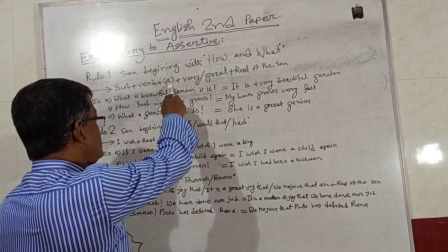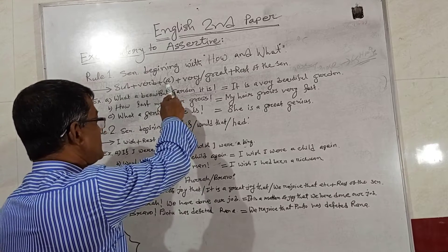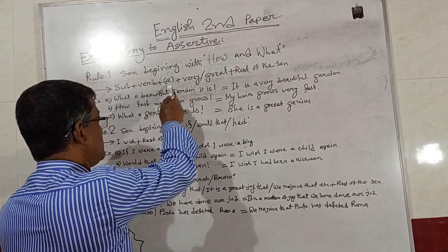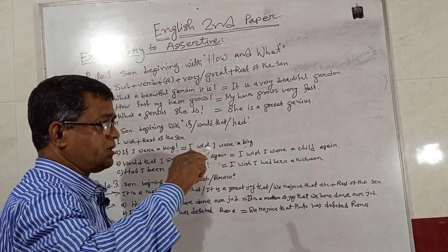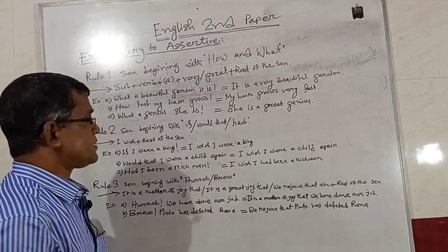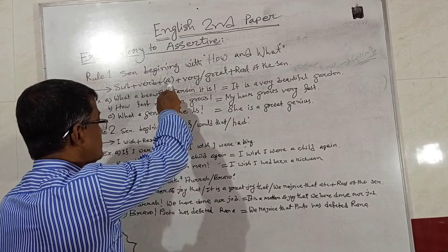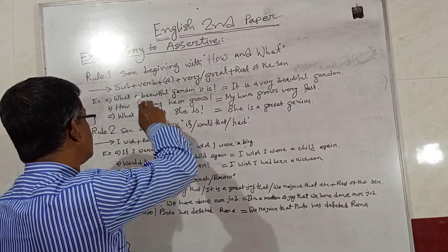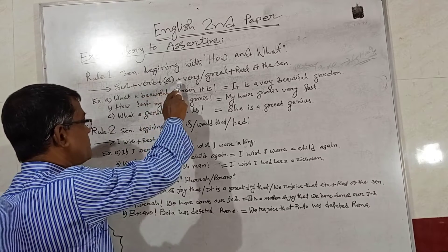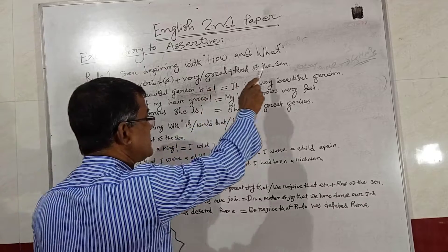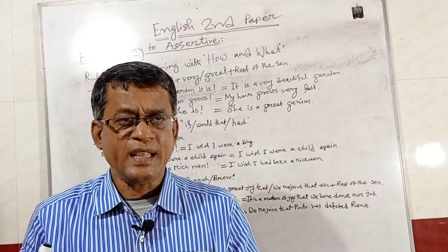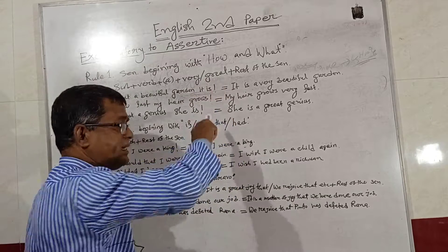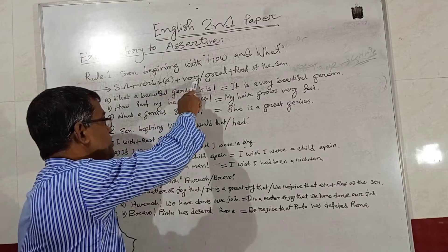Notice that A is within brackets — it has a special meaning. If there is an article A in the sentence, we will use it before the adjective. But if there is no article — either A or AN — we will not write it. If we have a noun, we use 'great'; if we have an adjective, we use 'very.' The structure is: Subject + Verb + (A) + Very/Great + rest of the sentence.